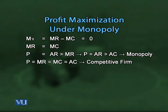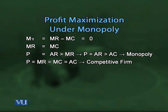In the competitive firm case, the result was price equals marginal revenue, which also equals average revenue, and in the long run this equals the lowest point of the average cost curve. But under monopoly, when we find the profit-maximizing price-output combination, price is greater not only than marginal revenue but also greater than marginal cost.